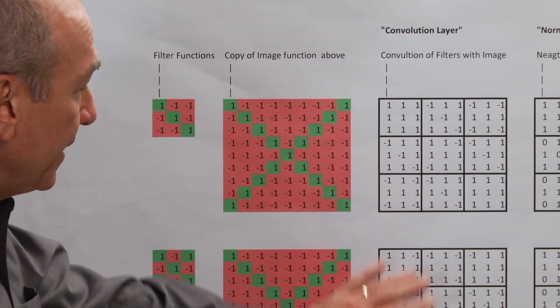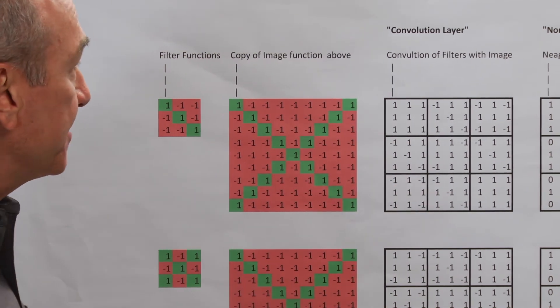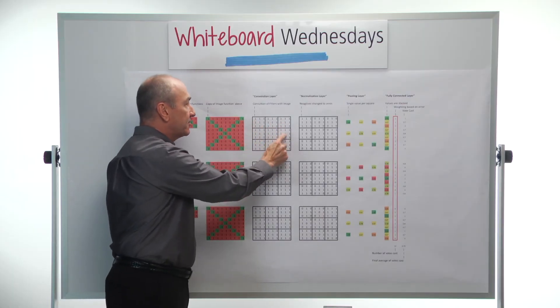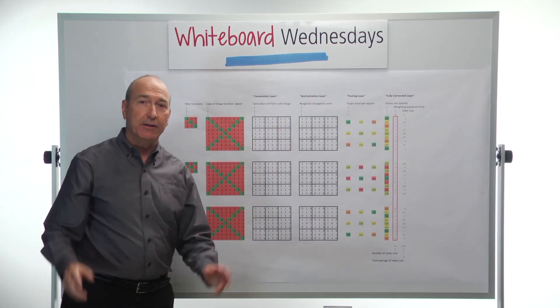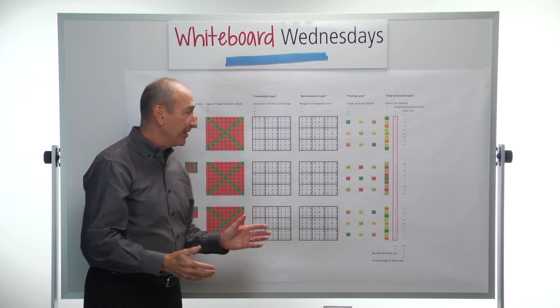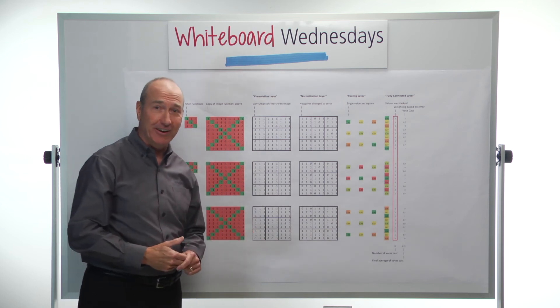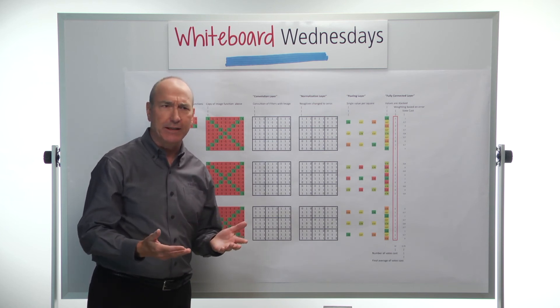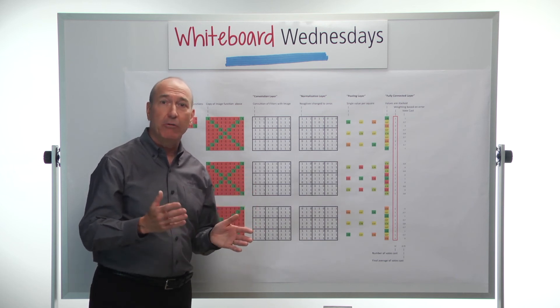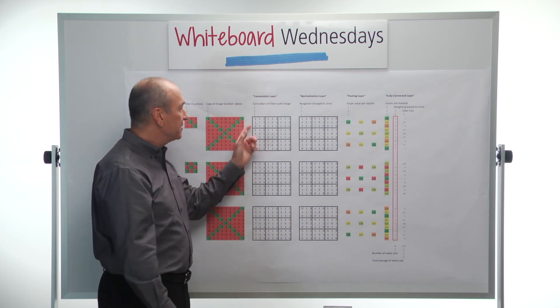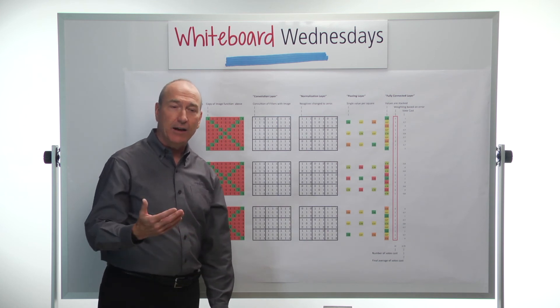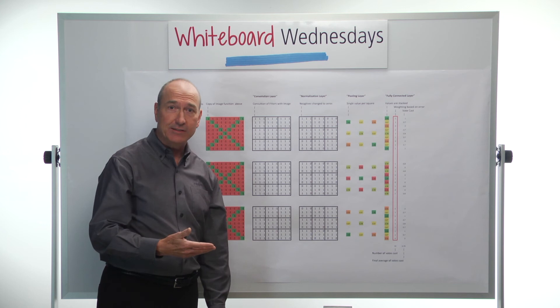That gives us this array of ones and minus ones. Eventually, we're going to get to a point where each of the values in these squares, each group, is going to vote to decide whether or not this image was an X or not. That voting means we've got to get those numbers down into a single number which represents a probability, like a number between zero and one. These minus ones are not going to help us in that process - we need to get rid of the minus ones. Real world neural networks do the same thing.